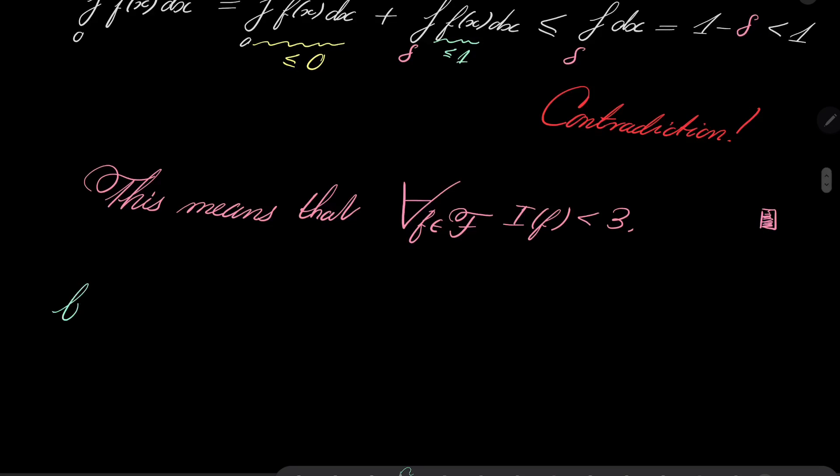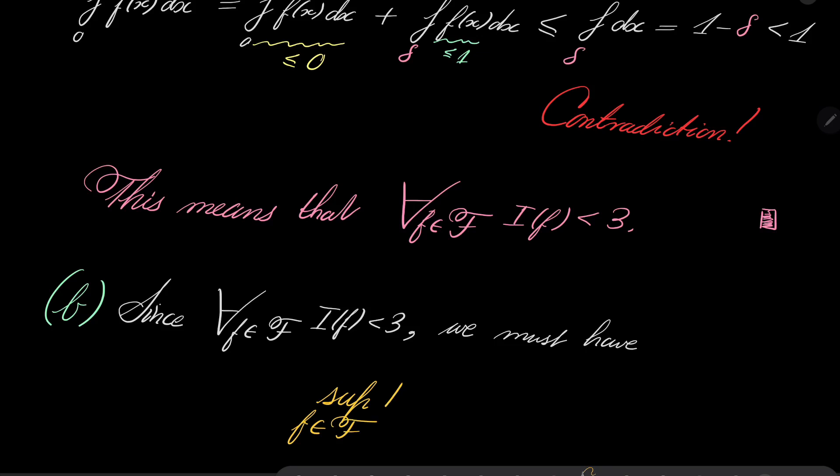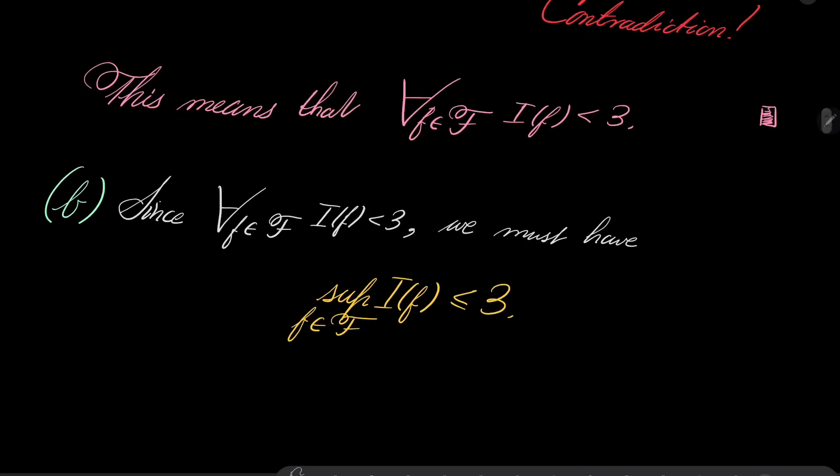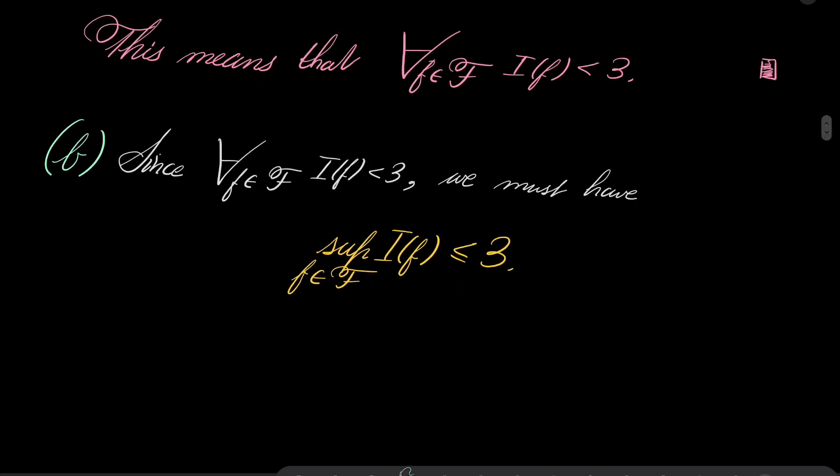Now part b. Notice that since for every f in our family, I(f) is less than 3, we must have the supremum over all elements of our family of I(f) is less than or equal 3, cannot be greater than 3. But now we will show that actually equality is attained.